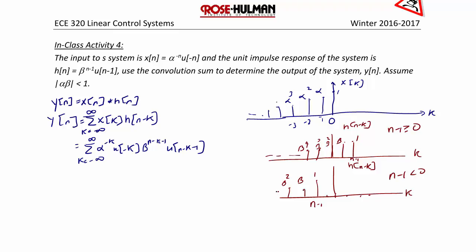Because we have two cases — one with n−1 ≥ 0 and one with n−1 < 0 — this gives us two different summations to solve. For n−1 ≥ 0, y[n] becomes the summation from k = −∞ to 0, because any other values are not overlapping and the sum will be 0.